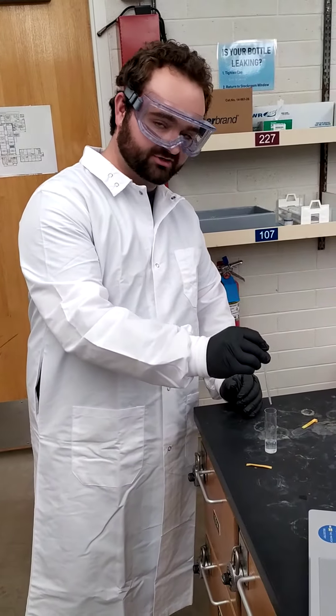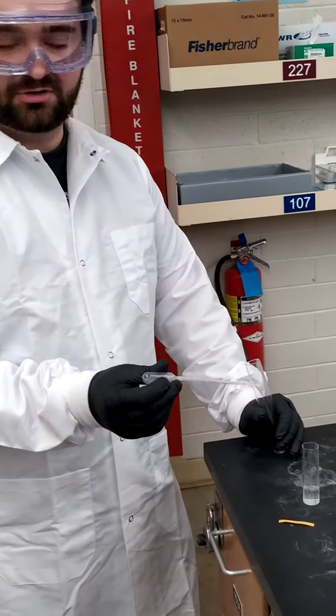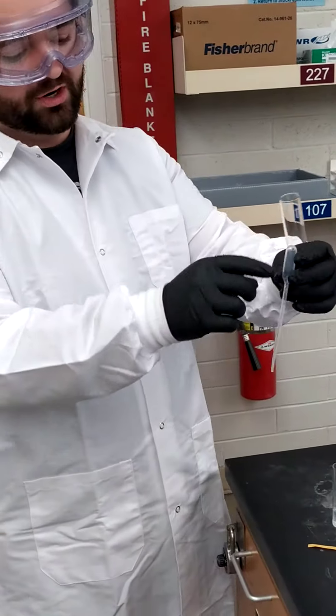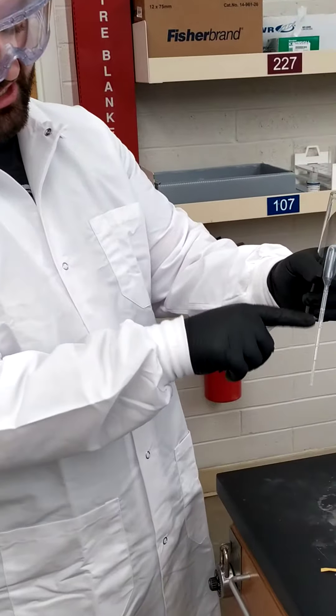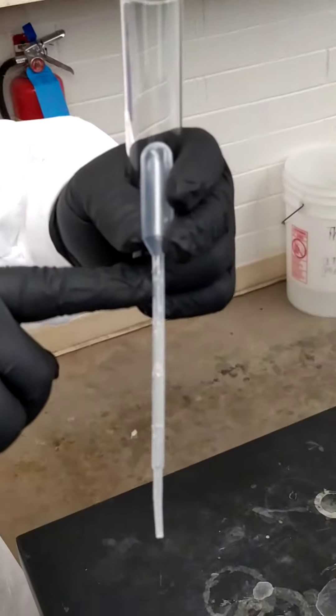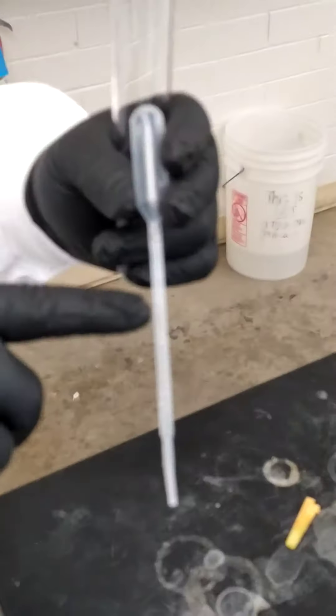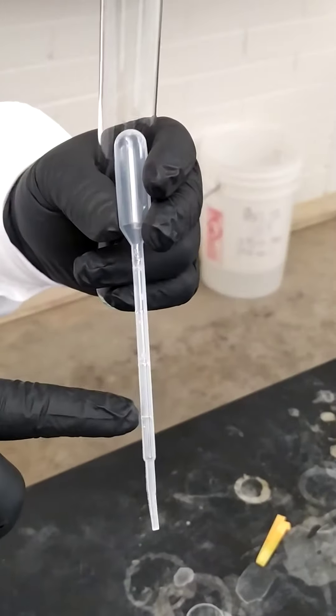So first of all, make sure it's empty. This one is not. But what you're going to do is we're going to do one milliliter. This is marked on the sides as you can see. Up here is one milliliter, half a milliliter, and 0.75 and 0.25.